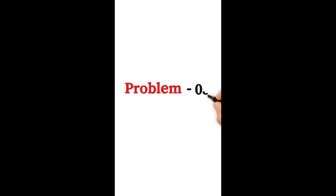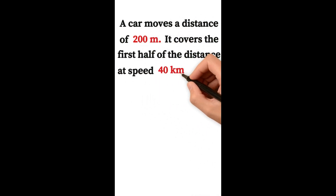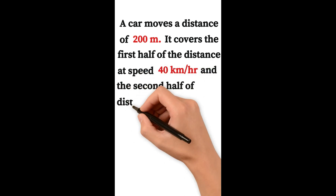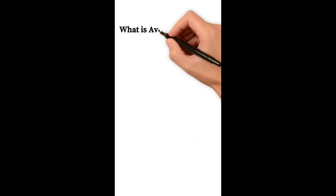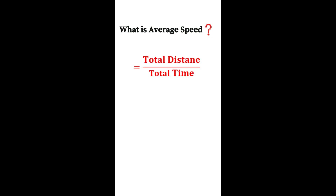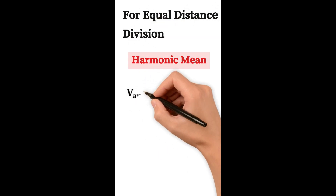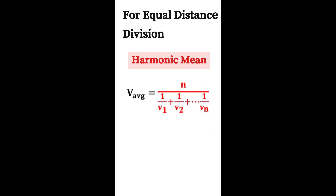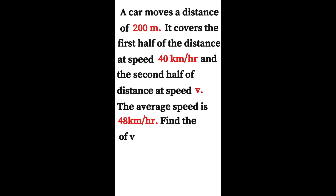A car moves 200 meters, covering the first half at 40 km/h and the second half at speed v. The average speed is 48 km/h; find v. Since distance is equally divided, we apply the harmonic mean: v_average = 2 / (1/v1 + 1/v2). With two cases, v_average = 2 / (1/v1 + 1/v2).